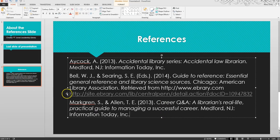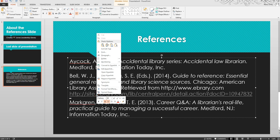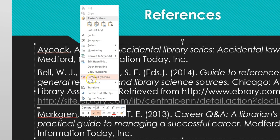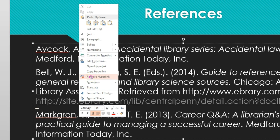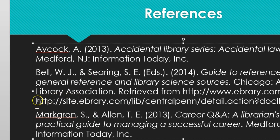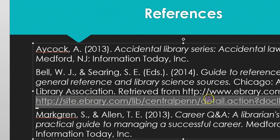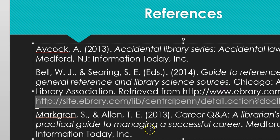If you have used any web sources, you must remove all the hyperlinks. To do that, right-click on the hyperlink, then select Remove Hyperlink. Next, highlight the entire link and click the Underline button to remove the underlining.